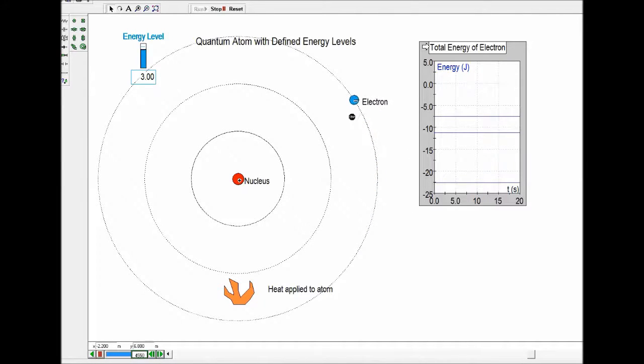The electron could drop from three to one. All the way from three out here to one. And that would be a different kind of photon. So the quantum nature of the atom is intricately related to the quantum nature of photons.